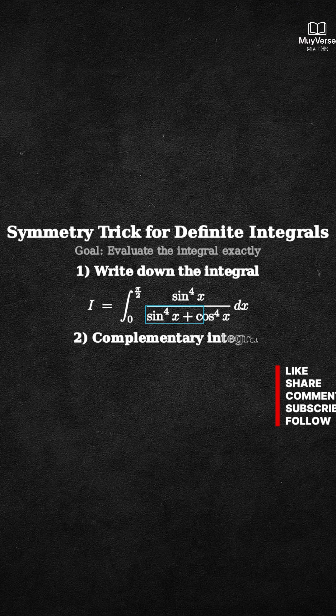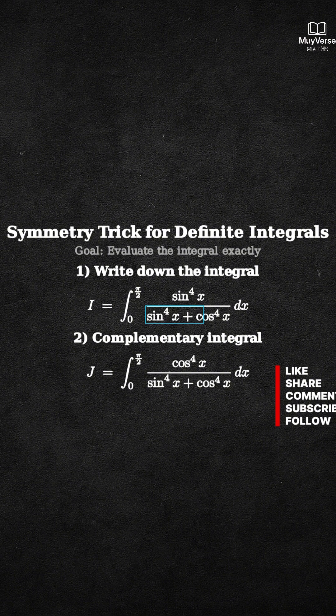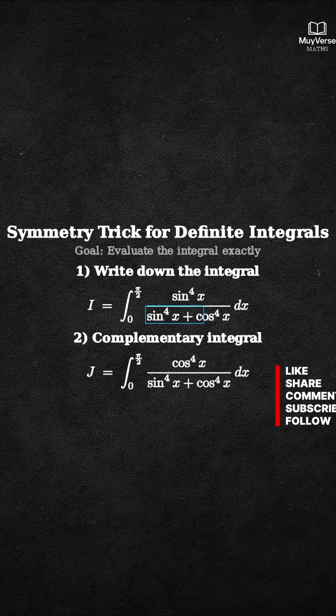Step 2: Introduce the complementary integral J. J equals the integral from 0 to pi over 2 of cosine to the 4th of x over the same denominator, sine to the 4th of x plus cosine to the 4th of x, dx.